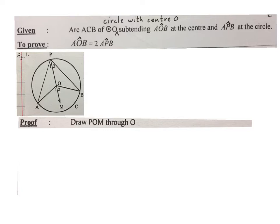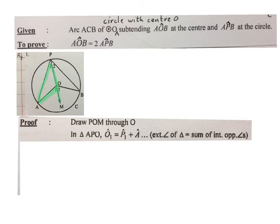Firstly, you will draw your line through P, O to M. You say here in your proof, you say draw P, O, M through O. Then we write, in triangle APO, the green one here, O1 is equal to P1 plus A. And your reason is exterior angles of a triangle.